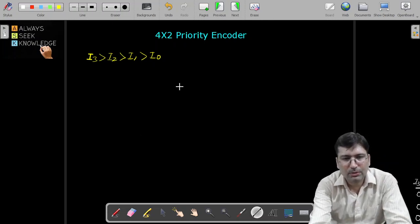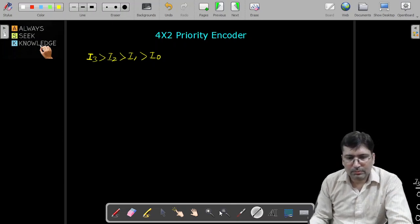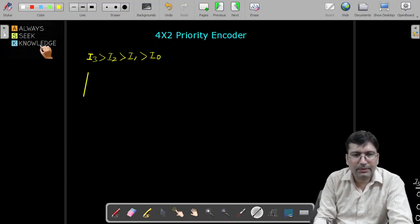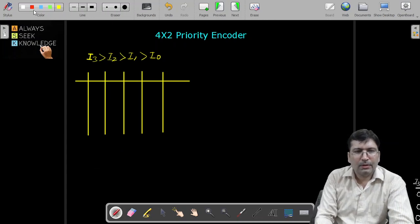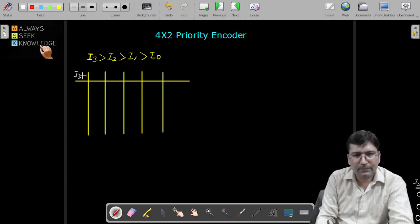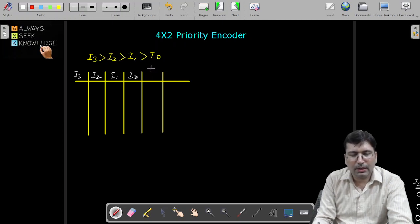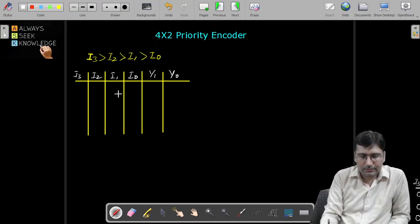In the truth table, let's say we have i0, i1, i2, i3 as inputs. We also have two outputs, y1 and y0. So we have inputs i3, i2, i1, i0 and output lines y1 and y0.